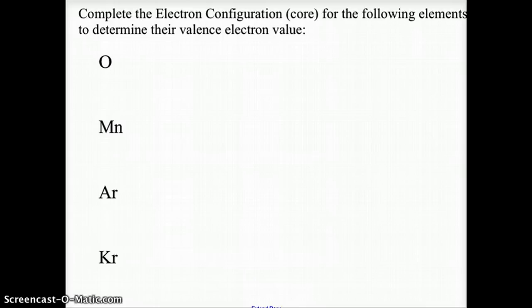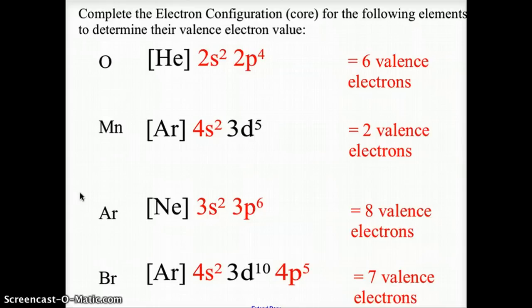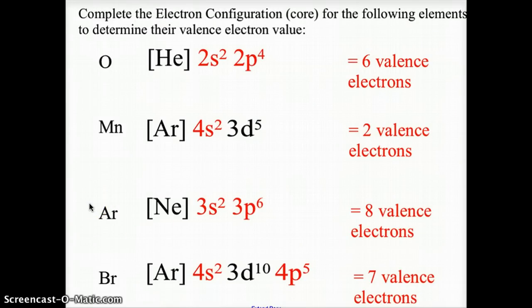So let's see how you did. For oxygen, we have 2s2, 2p4, giving us six valence electrons. For manganese, we have 4s2, 3d5, giving us two valence electrons, remembering that the d is not a valence electron orbital. Argon, we have 3s2, 3p6, giving us eight valence electrons.